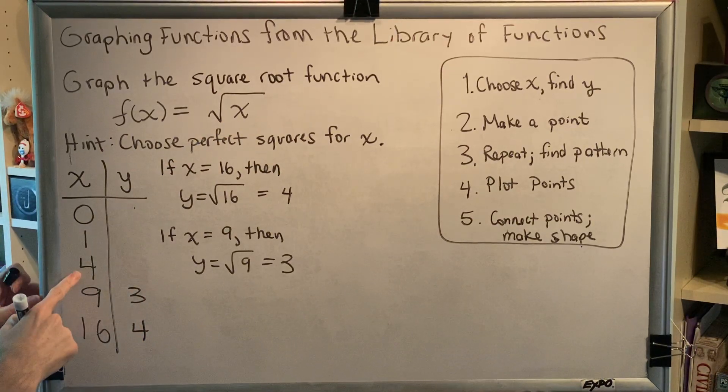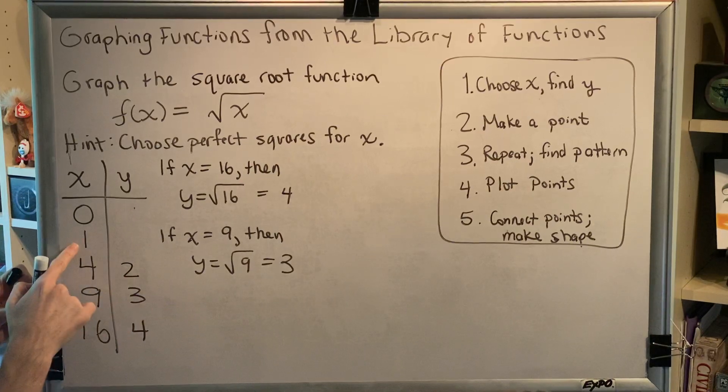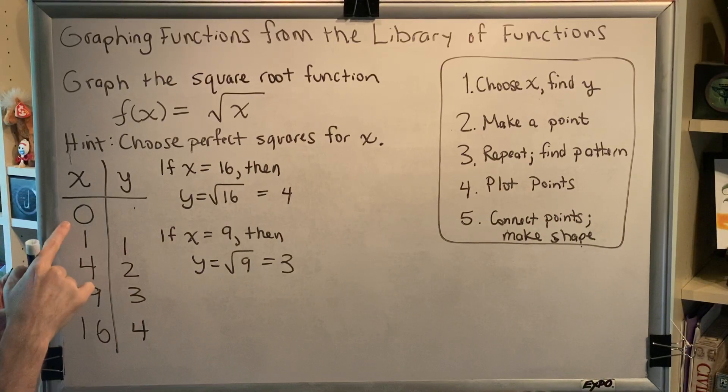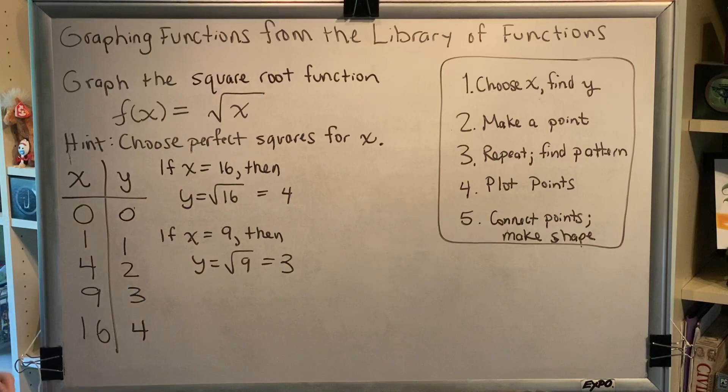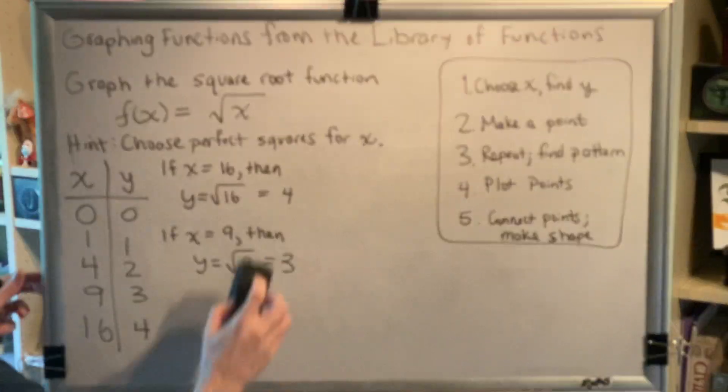So, the square root of 4 is 2, the square root of 1 is 1, the square root of 0 is 0. Now we plot our points. To do this, we need a graph scale.